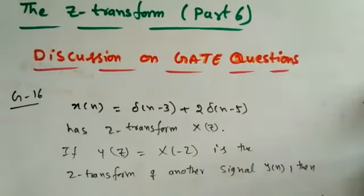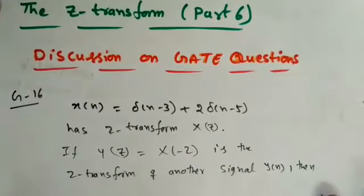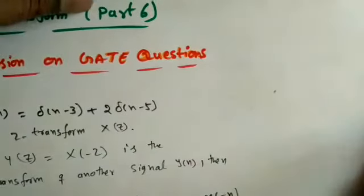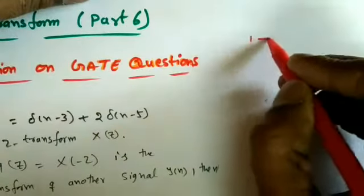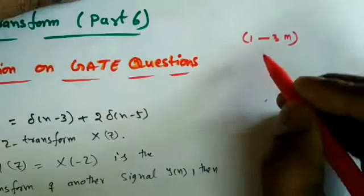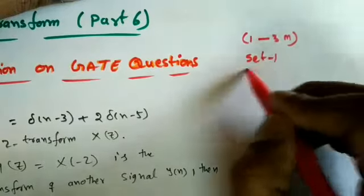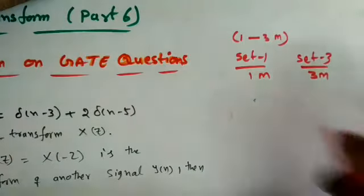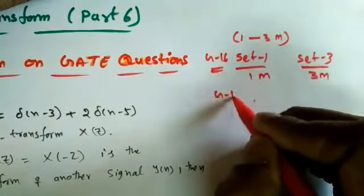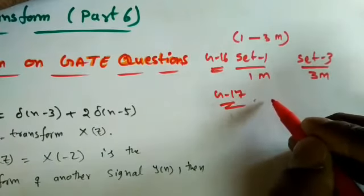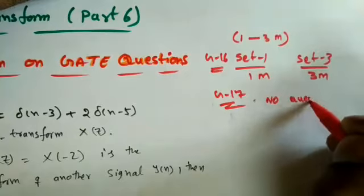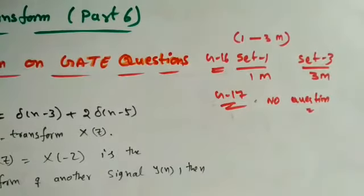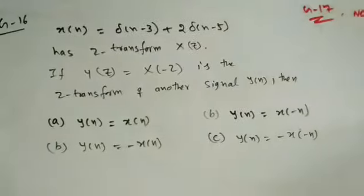In this lecture we're going to discuss previous GATE questions from the Z-transform. From the Z-transform, the GATE exam will have one, two, or three marks. In 2016 Set 1 we got one mark, Set 3 we got three marks. In GATE 2017 there was no question from Z-transform — a question came from the discrete-type polynomial transform. In GATE 2018 we may expect questions from the Z-transform.